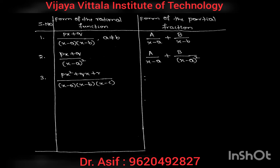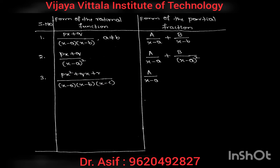The next rational function has a quadratic numerator and a product of three linear terms in the denominator. The degree of the numerator is 2 and the degree of the denominator is 3, so it is a proper rational function. Since we have three linear terms, three constants will come: A divided by x minus A, plus B divided by x minus B, plus C divided by x minus C. Note that capital C and small c are different.